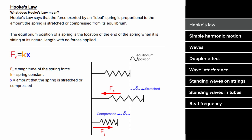Hooke's Law tells you how to find the force exerted by an ideal or linear spring, and it's a simple law. It tells you the amount of force that spring is gonna exert will be proportional to the amount that spring has been stretched or compressed from its equilibrium or natural length. In equation form, the magnitude of the spring force equals the spring constant multiplied by the amount the spring has been stretched or compressed.